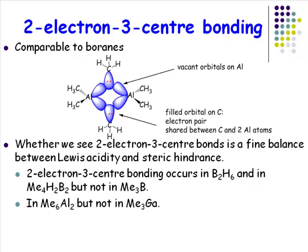If you have a slightly less electron-deficient element like gallium, which is just underneath aluminium in the periodic table, you might expect trimethylgallium to have the same structure as trimethylaluminium. It doesn't. Trimethylgallium does not have bridging methyl groups, and as a consequence it is much more volatile — it's not dimeric — so it's actually a much more volatile molecule than trimethylaluminium.